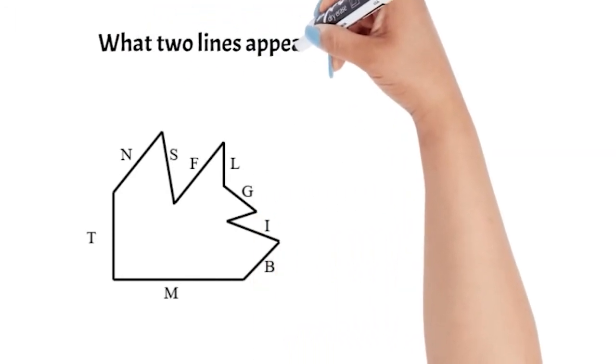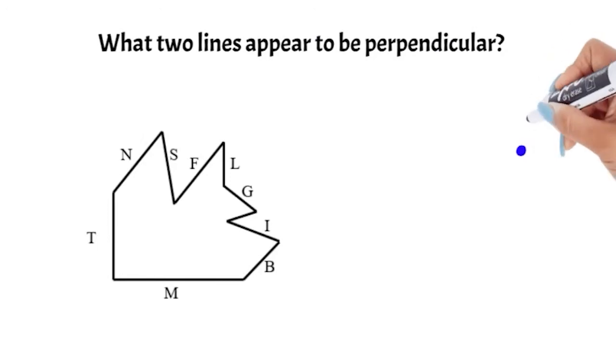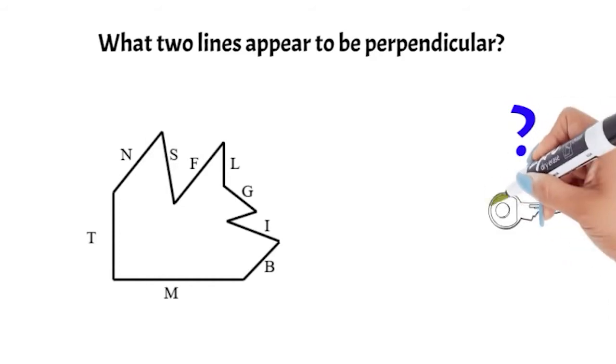What two lines appear to be perpendicular? First, I need to ask myself what is the question asking. What two lines appear to be perpendicular? The key word here is perpendicular.